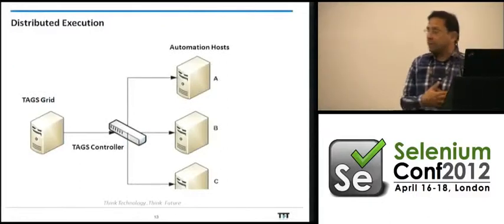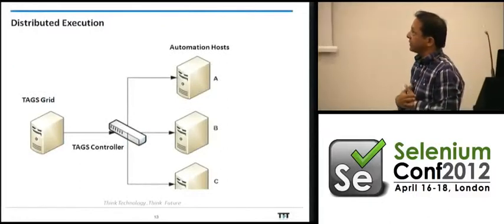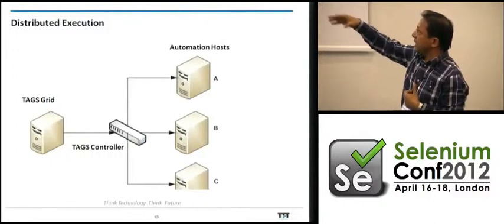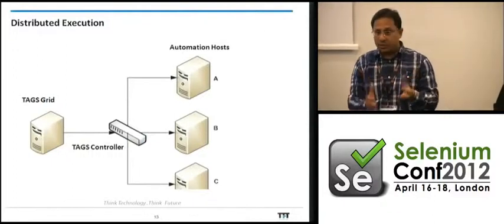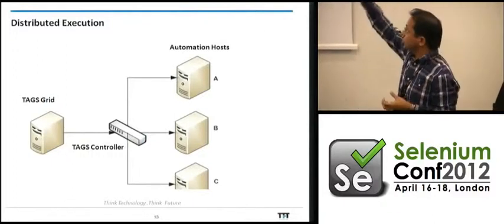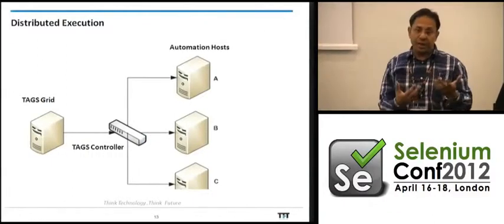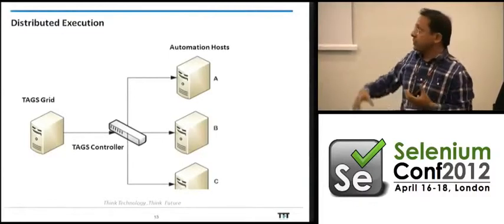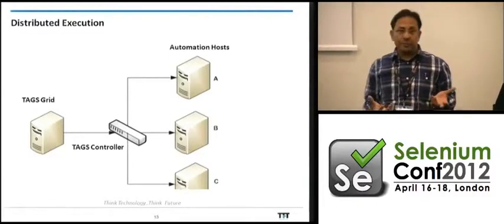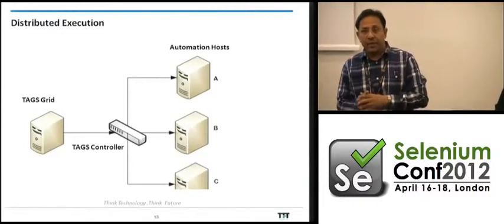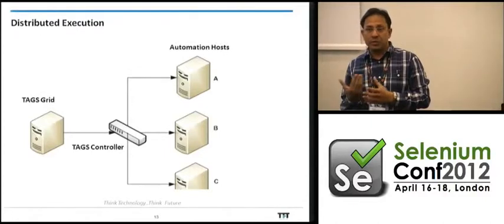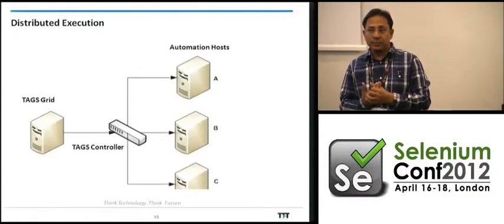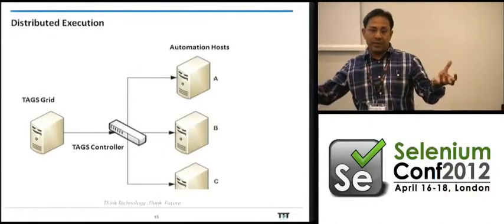The TAG Grid allows one web-based controller to drive various VMs on the fly. For example, we have a client — Match.com — which has a suite of around 3,000 test cases, and we execute them in parallel on 10 VMs.